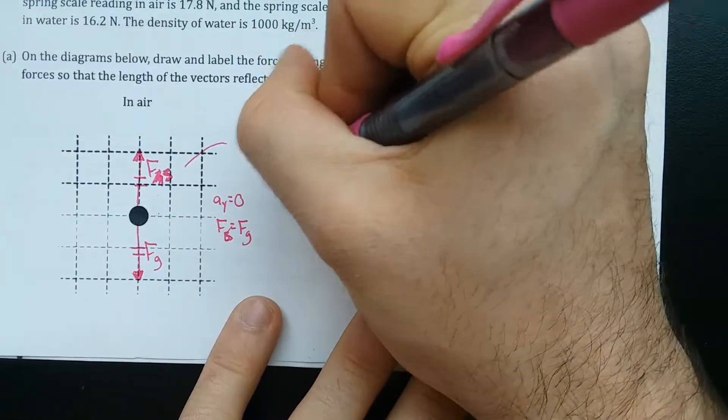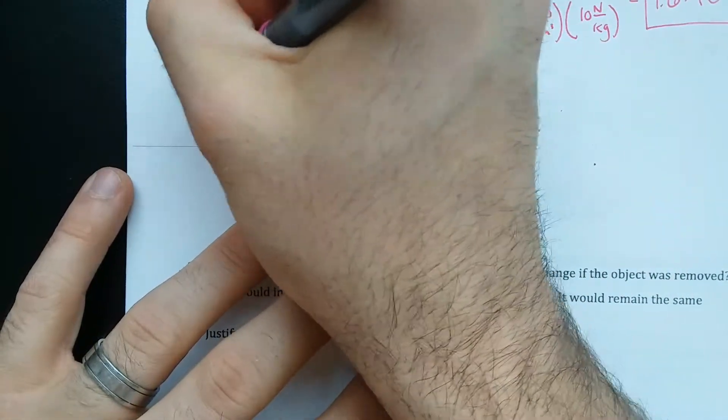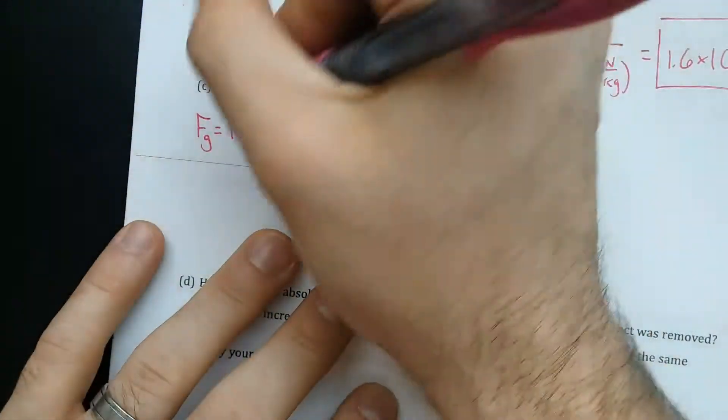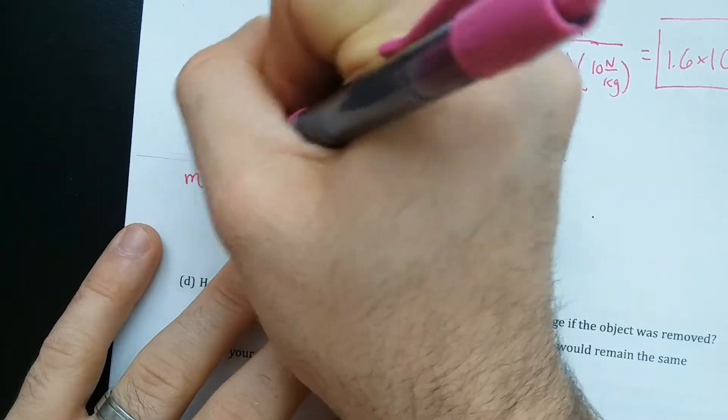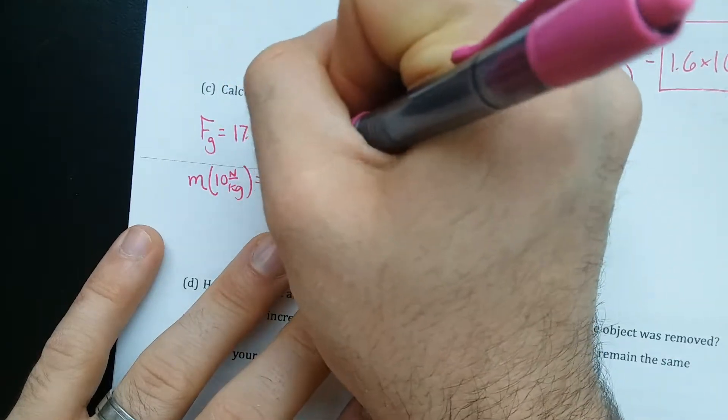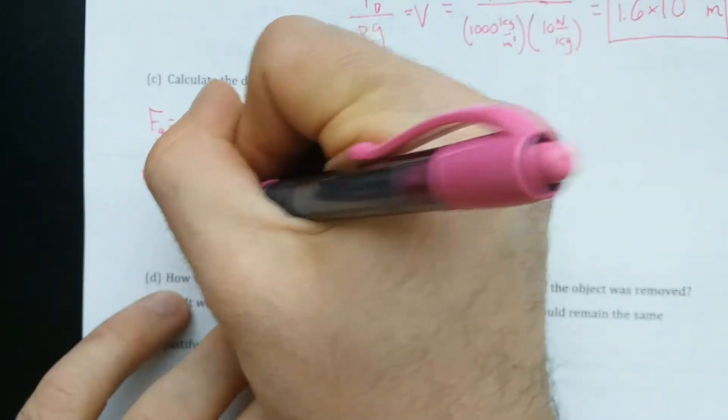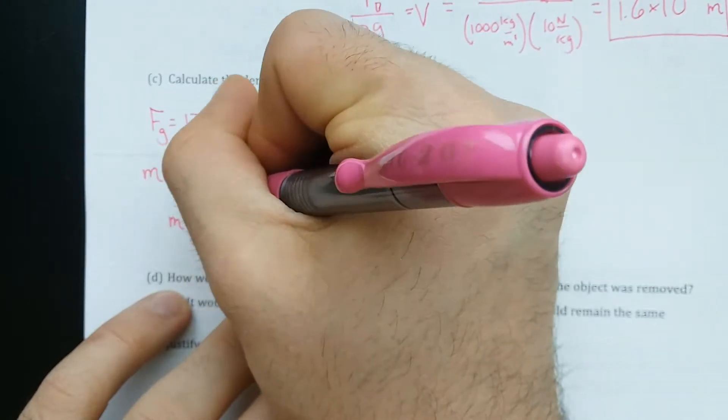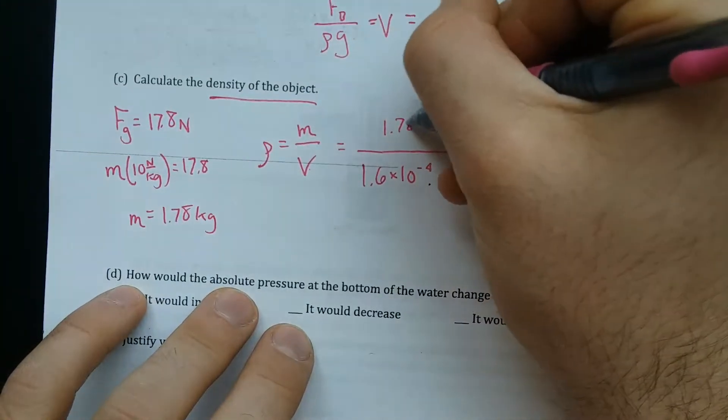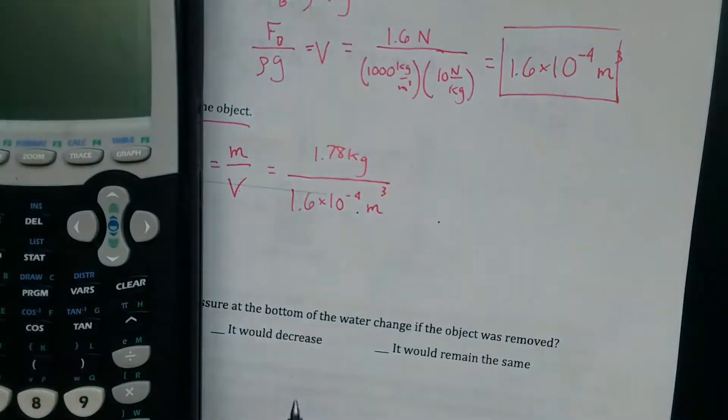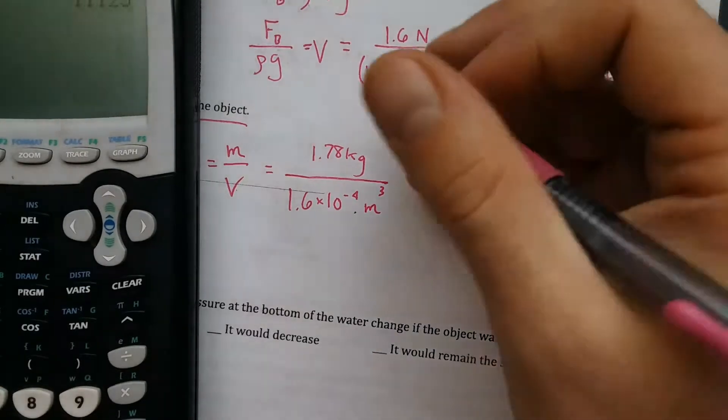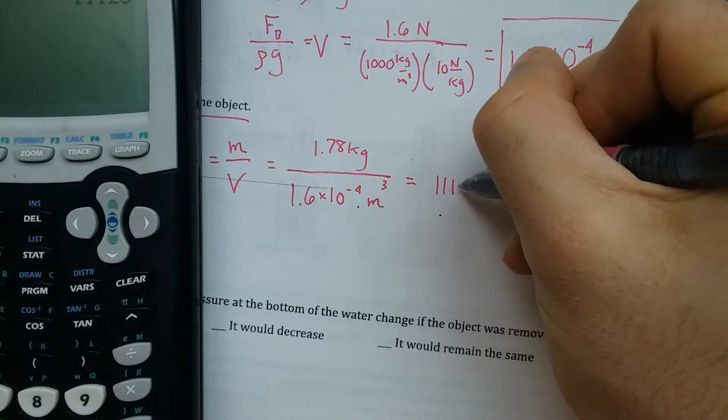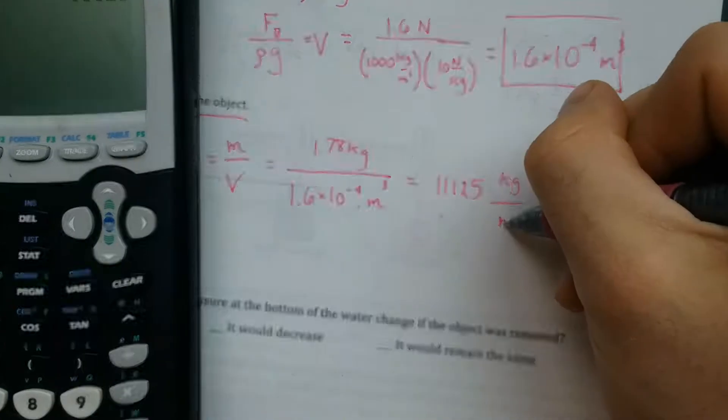This is equal to the force in the spring, which equals Mg. Because I know the gravitational force must be 17.8 Newtons. And that means M times 10 equals 17.8. And this is just M equals 1.78 kg. So 1.78 divided by 1.6 E negative 4 equals 1115 kg per cubic meter.